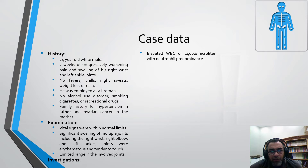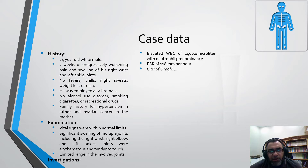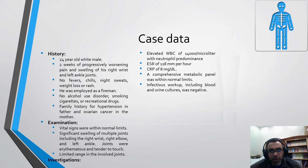Investigations revealed elevated white blood cells over 40,000 per microliter with neutrophil predominance, ESR elevated over 118 mm in the first hour, and CRP positive at 8 mg per deciliter. A comprehensive metabolic panel was within normal limits. Infectious workup including blood and urine cultures were negative.